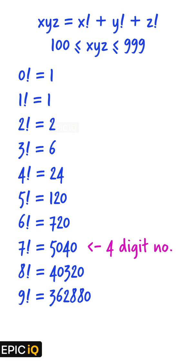none of the x, y, or z can have a value of 7. In fact, none of them can have a value of either 8 or 9, as their factorials are even greater than the factorial of 7.